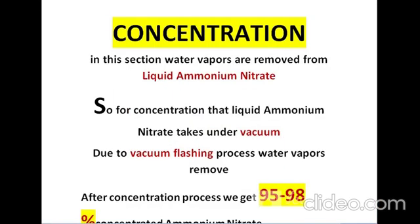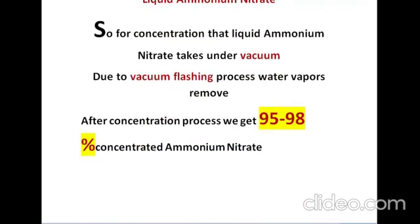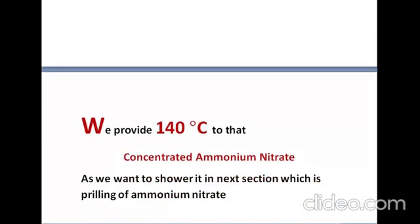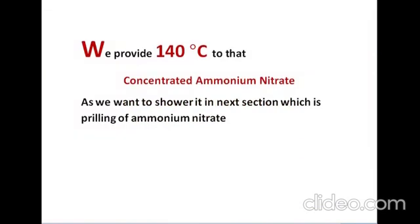The second manufacturing step is concentration. In this section, water vapors are removed from the liquid ammonium nitrate. The liquid ammonium nitrate is taken under vacuum, and through a vacuum flashing process the water vapors are removed. We obtain 95 to 98% concentrated ammonium nitrate. After that, we heat it to 140°C so it can be showered in the next section, which is prilling.